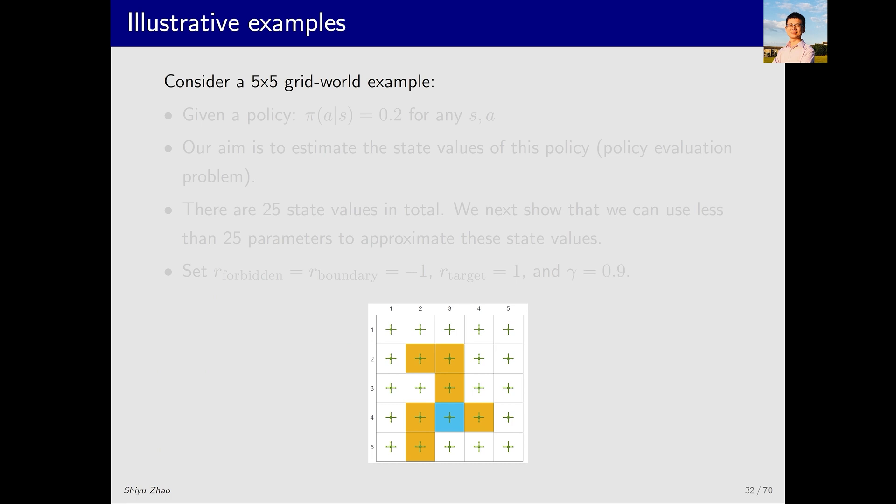In this grid world example, it's a 5x5 grid with a total of 25 states. First we have a policy, which is depicted by the arrows. This policy is exploratory, because it assigns the same probability of 0.2 to each of the 5 actions. What we need to do next is to estimate the state value of this policy. Essentially this is a policy evaluation problem.